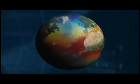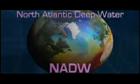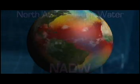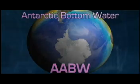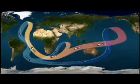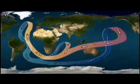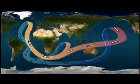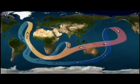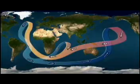The water mass sinking off Greenland is called the North Atlantic Deepwater or NADW. The water mass sinking off Antarctica is called the Antarctic Bottom Water or AABW. They both sink down several kilometers while spreading out horizontally and moving along the bottom of the Atlantic Ocean. They eventually mix while circulating around Antarctica, then move into the deep Indian Ocean and finally into the Pacific.